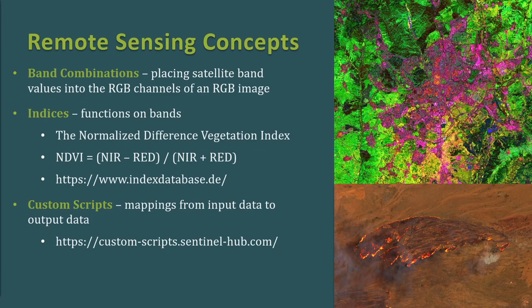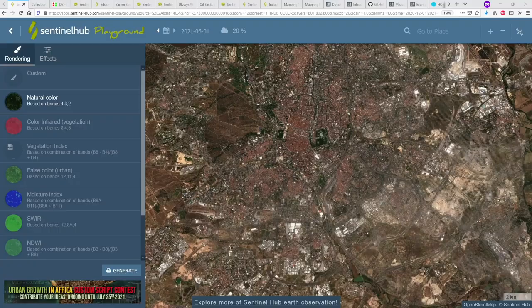There are many indices, all available on the index database which we'll show shortly. The last concept is the custom script — essentially a Sentinel Hub concept that allows you to define mappings from input data to output data. This includes support for different dates and data fusion, combining different sensors in the same script, into any output combination. It's a single-pixel-based approach, so you can't do convolution but you can do pretty much anything else. There's a dedicated one-hour webinar just on custom scripts.